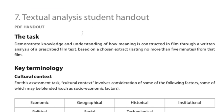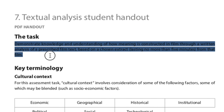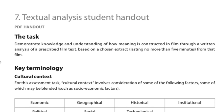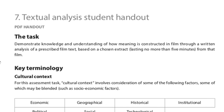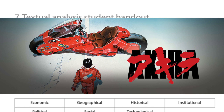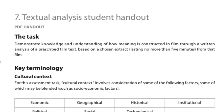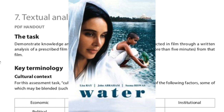The task is to demonstrate knowledge and understanding of how meaning is constructed in film through a written analysis of a prescribed film text, based on a chosen extract lasting no more than five minutes. The films we've chosen are: Stranger Things (first and second episodes together), Akira — an anime film from Japan — and Water, an Indian film from 2005.